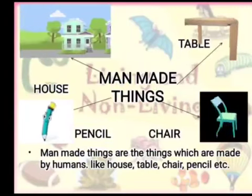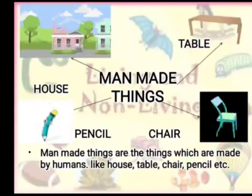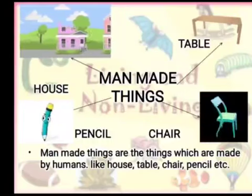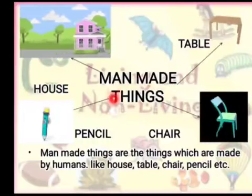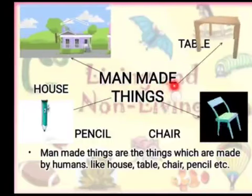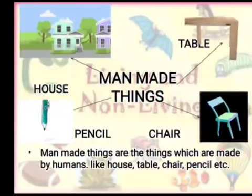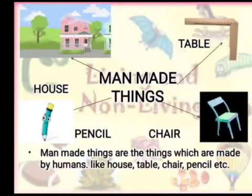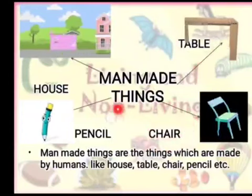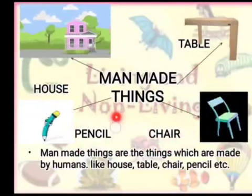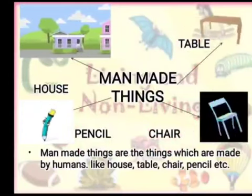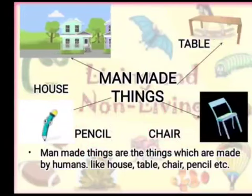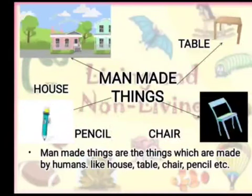What are man-made things? Man-made things — the term itself tells us that these are things which are made by men, like house, table, chair, pencil. These things are made by men, so we call them man-made things.